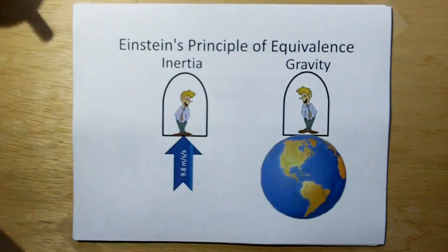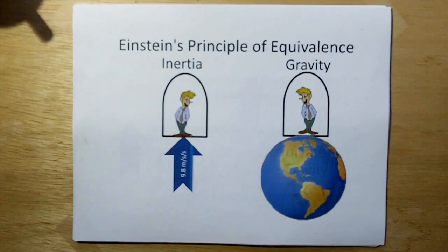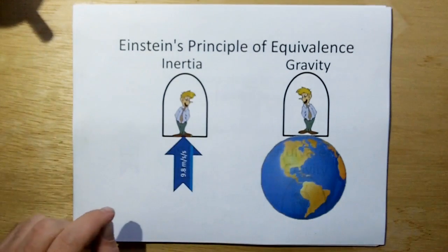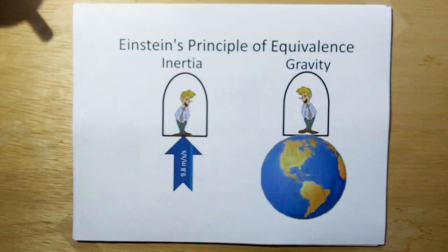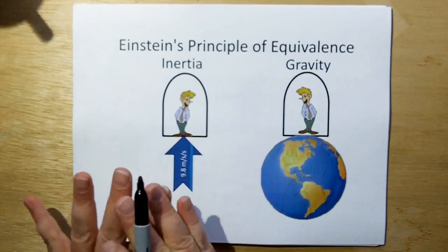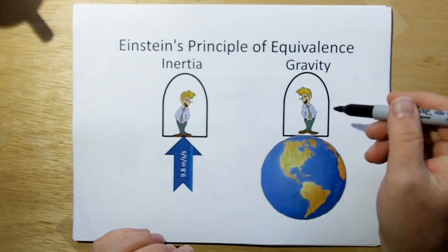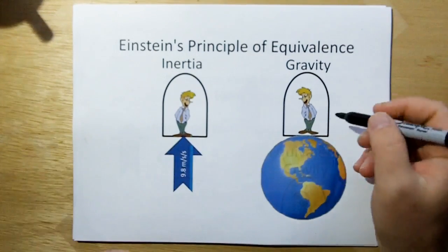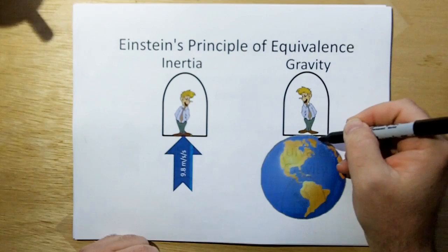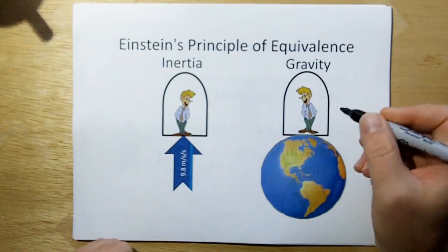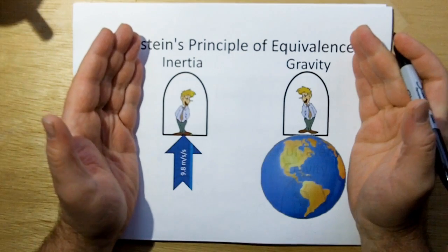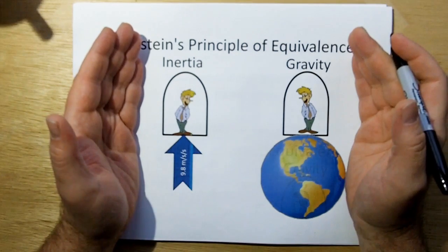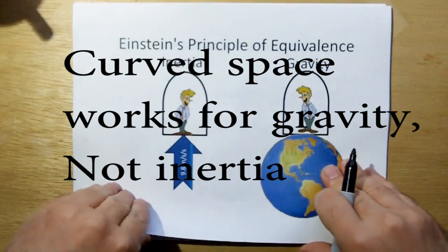So now if we revisit Einstein's principal equivalence, he said that if you're in a spaceship and you're accelerating by 9.8 meters per second squared, which is the acceleration of gravity on the earth, you will not be able to tell the difference in that spaceship, assuming no windows or anything, even if that spaceship were planted on the earth. He came up with the equivalence between inertia and gravity, but not an explanation as to why. His explanation was curved space.